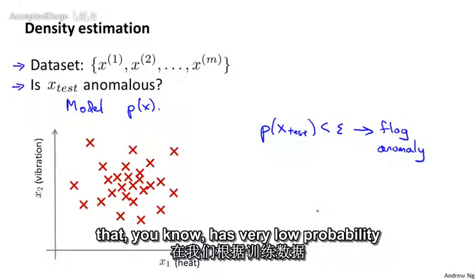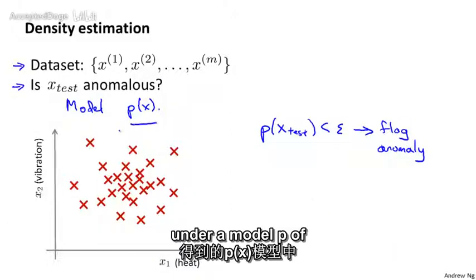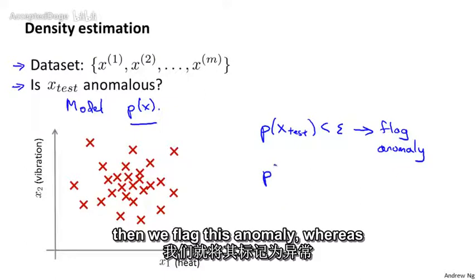So we see a new engine that has very low probability under our model P of X that we estimate from the data. Then we flag this anomaly.